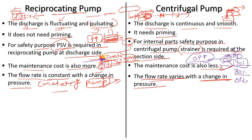In a reciprocating pump, a flow control valve is typically used on the discharge, while in a centrifugal pump, a pressure control valve is mainly used. Please think about it logically.